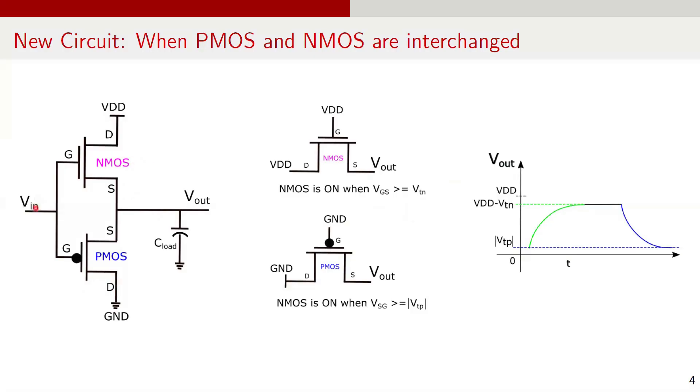In this configuration, when the input transitions from 0 to 1, the NMOS gradually turns on while the PMOS gradually turns off. This allows the capacitor at the output node to charge. However, the NMOS can only charge the output node up to VDD minus VTN because beyond this point, the gate to source voltage VGS becomes less than the threshold voltage of NMOS denoted as VTN turning the NMOS off. As a result, the output cannot reach the full VDD. It is limited to VDD minus VTN.